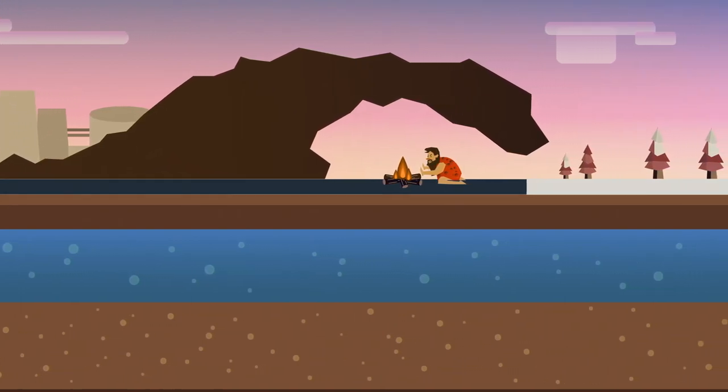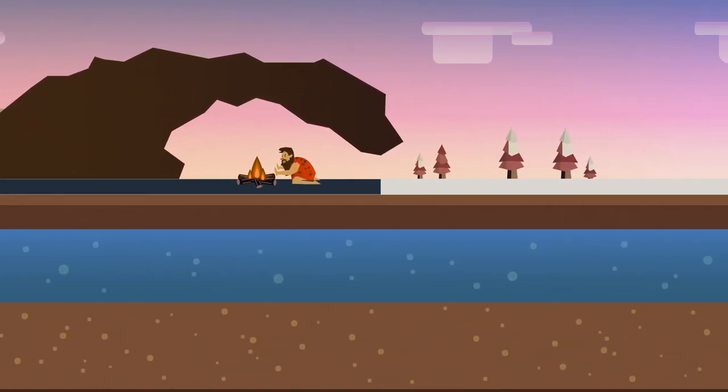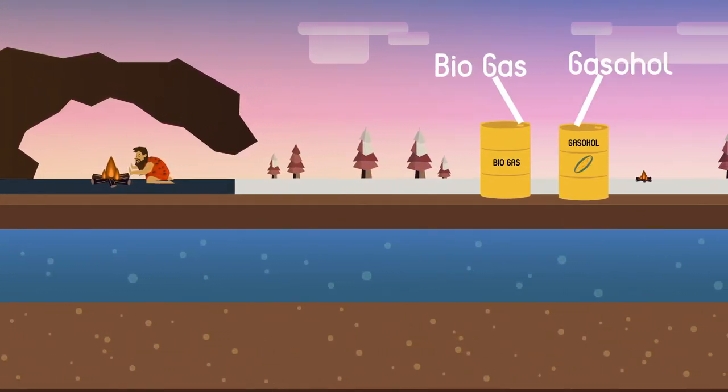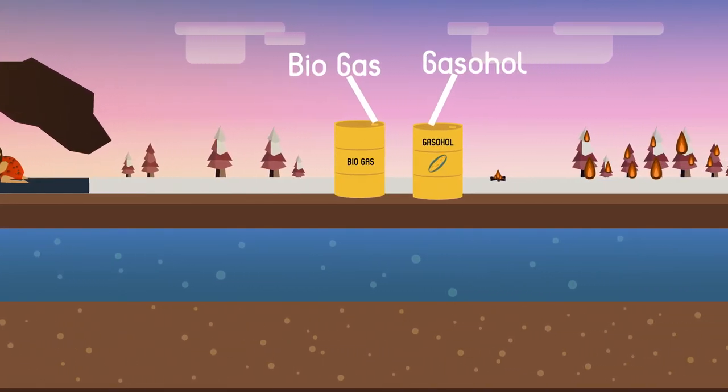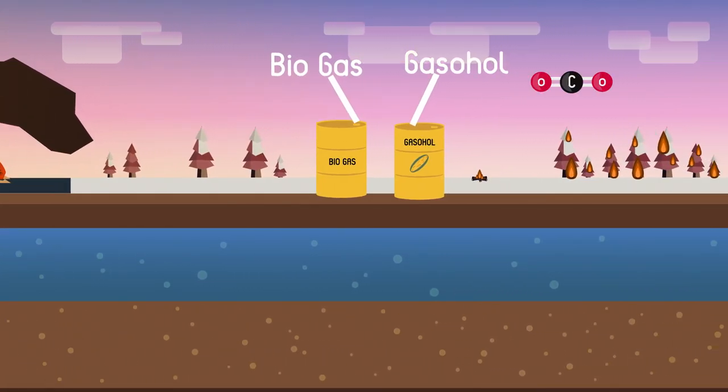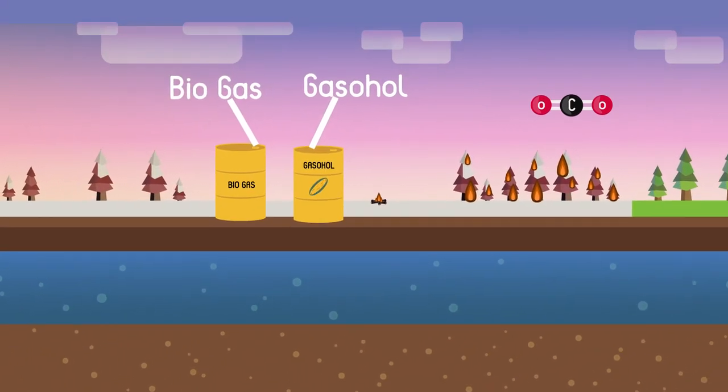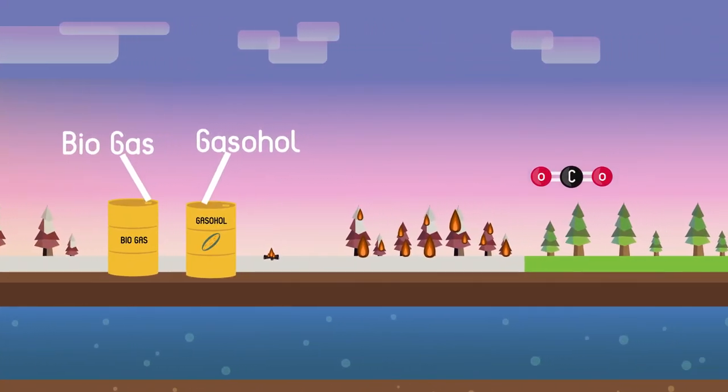Perhaps firewood is the oldest biofuel mankind has used. We now have biogas, gasohol, and many more. Carbon dioxide is produced when these burn. But as long as the trees and the plants are allowed to regrow, burning them simply helps carbon on its way round its natural cycle.